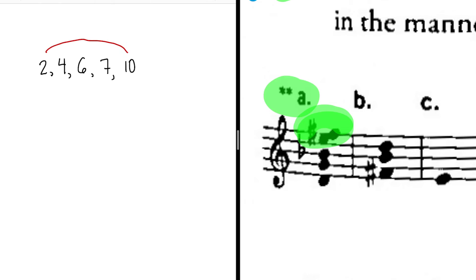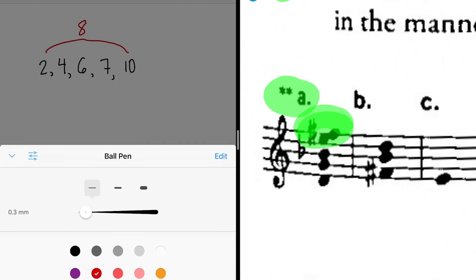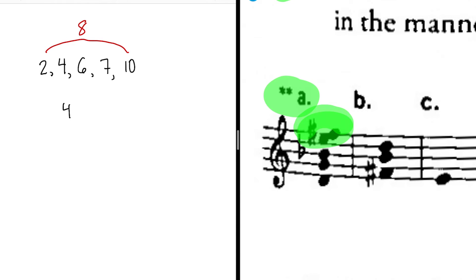Now we have to try every rotation and find the smallest boundary interval. The distance between 2 and 10 is 8. 4, 6, 7, 10, 2. 6, 7, 10, 2, 4. 7, 10, 2, 4, 6. And finally 10, 2, 4, 6, 7.